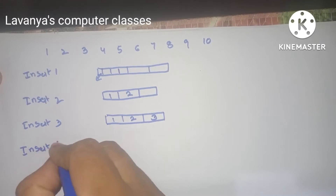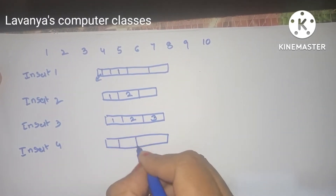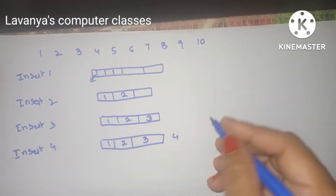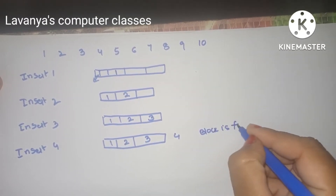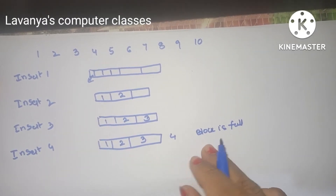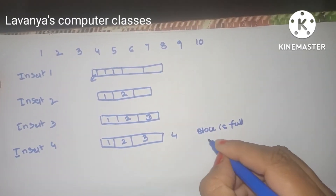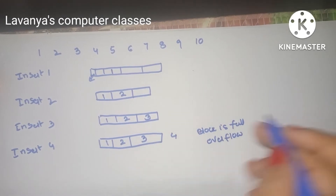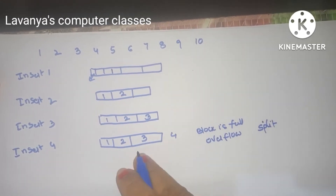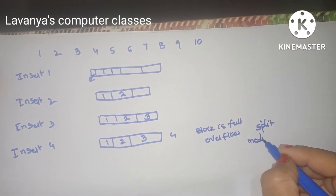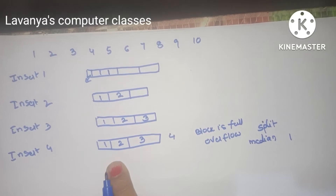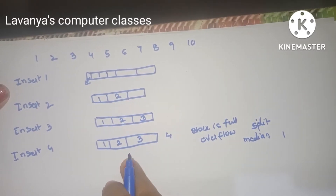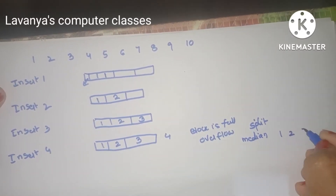Insert 4. Whenever we insert 4, it tries to go into the first node, but it is already filled with 1, 2, 3. So when 4 comes, the block is full — this is called an overflow problem. Whenever overflow occurs, we split the node. How do we split? Find the median of the numbers. The numbers are already in ascending order: 1, 2, 3, 4. The median candidates are 2 and 3.